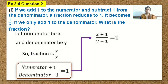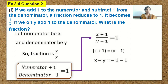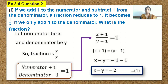Let's cross multiply so that we get x plus 1 is equal to y minus 1. We will open up the bracket and frame an equation. We will have x minus y is equal to minus 1 minus 1, and minus 1 minus 1 is equal to minus 2. So, we have x minus y is equal to minus 2, and we will consider this as equation 1.